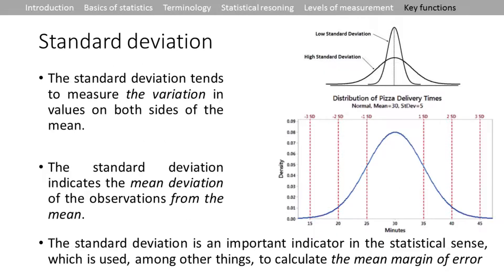These figures help you understand standard deviation better. Think of it as variation from both sides of the mean — like wings on either side. Low standard deviation means small wings and a high peak, so observations are gathered near the mean. High standard deviation means the distribution is fat and spread out — observations are far from the mean, so the standard deviation is higher and the peak is lower.